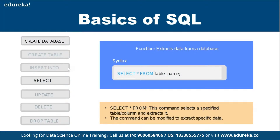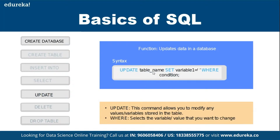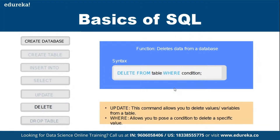Once data is inserted you need a way to retrieve it — that's where the SELECT query comes in. Using SELECT you can get information from any table in your database. UPDATE is used when you want to change a particular value in a table based on a condition: UPDATE table_name SET column_name = value WHERE condition. DELETE removes rows from a table based on a condition; if you don't specify a condition it will delete all rows.